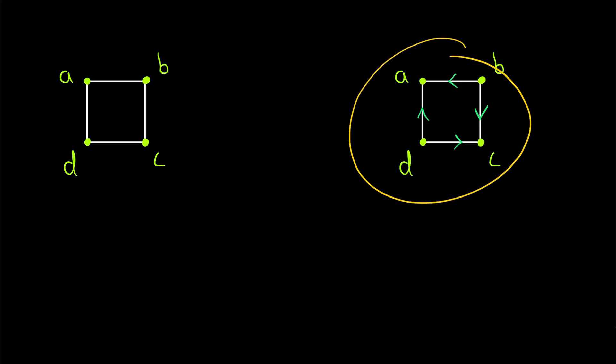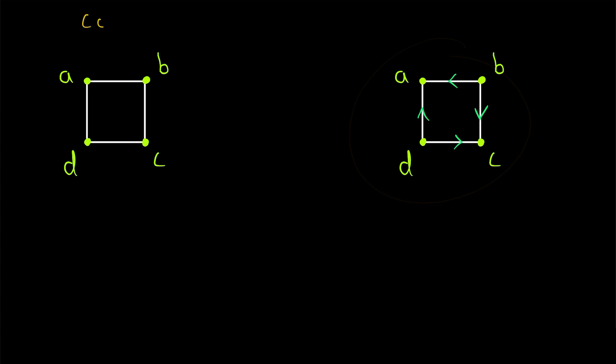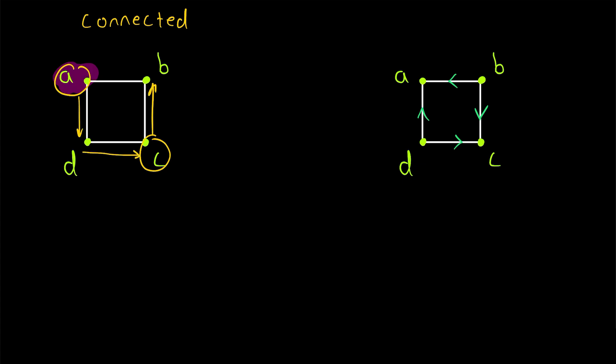What if we add direction to the edges? How do our old definitions apply to this new class of objects? When we talk about undirected graphs and we say that a graph is connected, that means that between any two vertices, there exists a path. So if we start at the vertex A, for example, we can travel to any other vertex in the graph by moving along the edges.